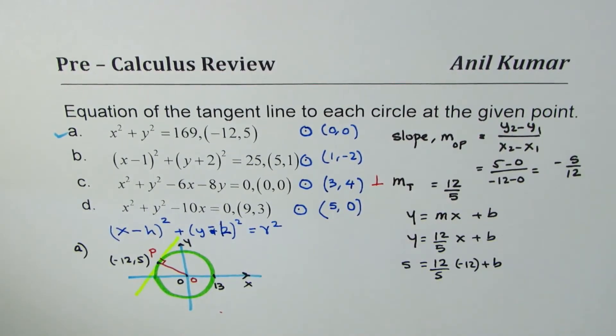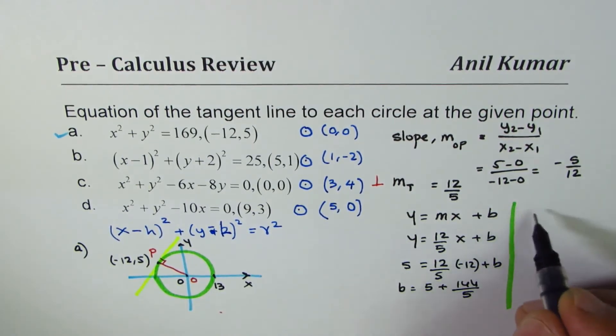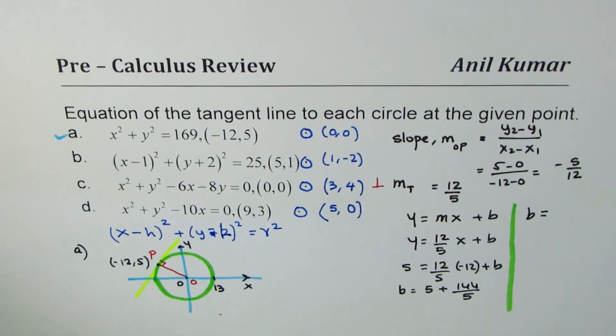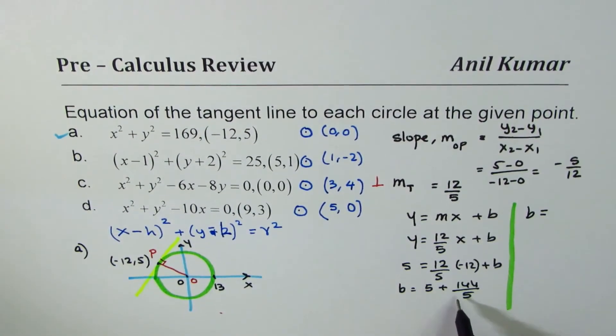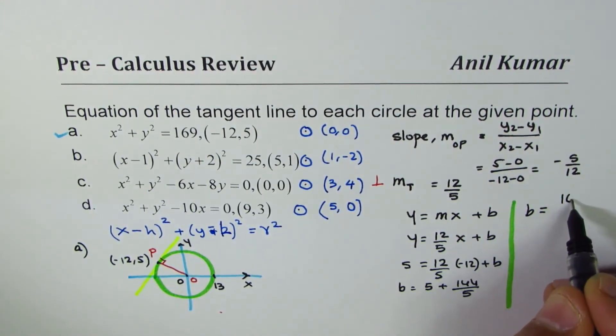Now, you can do some math here, do some calculations, and you can find that b will be equal to—bringing this to the right side, it becomes 5 minus becomes plus, 12 times 12 is 144, divided by 5. That should give me b = (25 + 144)/5 = 169/5.